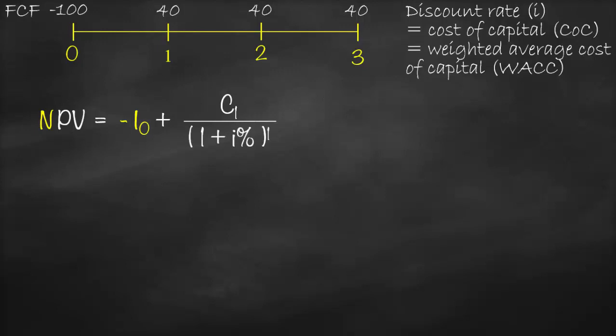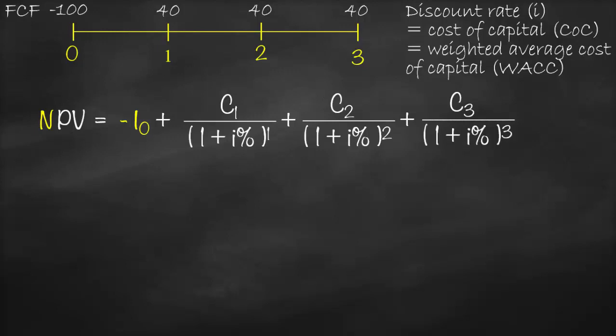That gives us the present value of the cash flow at year one, plus the present value of the cash flow at year two, which is C2 — C refers to cash flow — divided by one plus interest rate to the power two, because this is year two. Plus the present value of the free cash flow in year three, which is C3 divided by one plus interest rate to the power three.